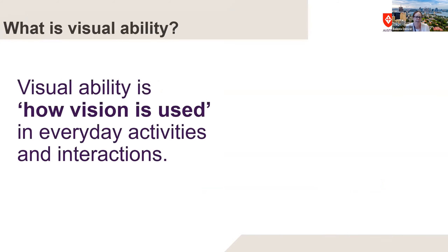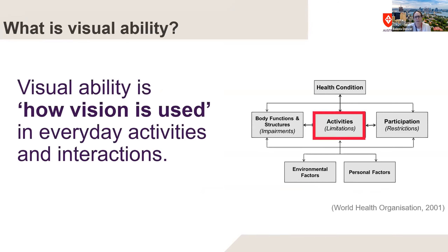What is visual ability? Within this research, I've defined visual ability as how vision is used in everyday activities and interactions. For those familiar with the World Health Organisation's International Classification of Functioning, Disability and Health, visual ability is activity-level purposeful use of vision. The use of the ICF framework acknowledges the influence of other domains on how vision is used — for example, a child's visual ability will be influenced by environmental factors, their level of motor impairment, and their visual function.